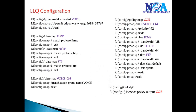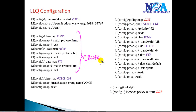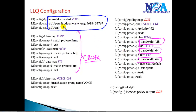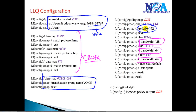There is not much difference in configuration when compared to class-based weighted fair queuing. We still handle other traffic like ICMP, HTTP, and FTP using CBWFQ with minimum guaranteed bandwidth. The only difference is that we match voice traffic using an access list matching UDP port numbers 16384 to 32767, define them in a class map, and then use the priority command instead of the bandwidth command. This guarantees the maximum amount of bandwidth as priority traffic.